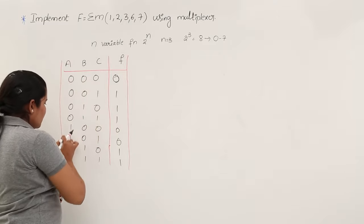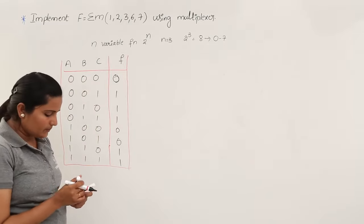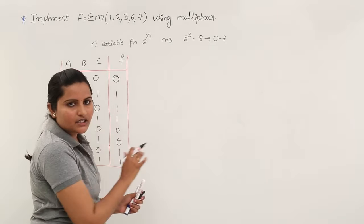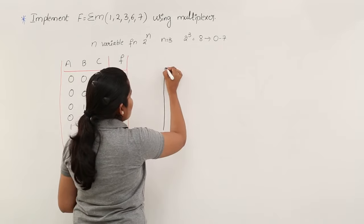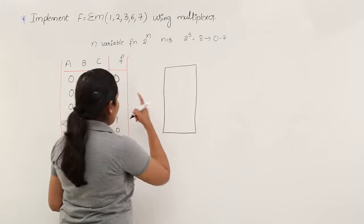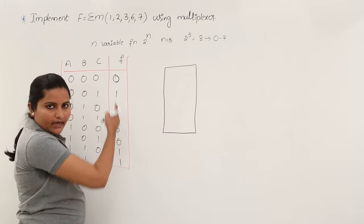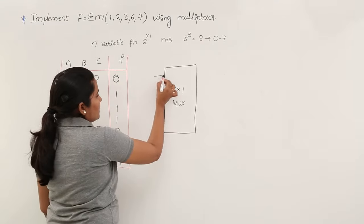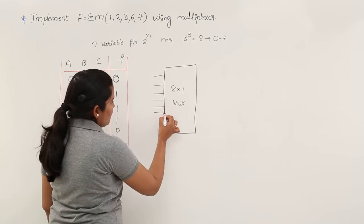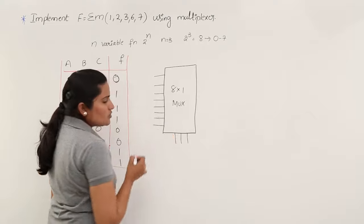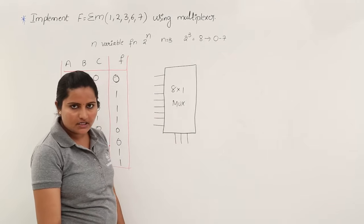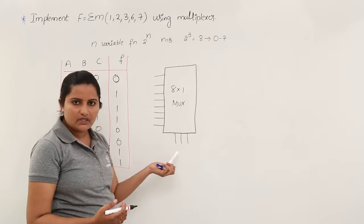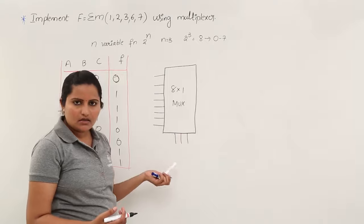Now, using this truth table, to design this functionality using a multiplexer, you need to place your functionality values at the inputs of the MUX, and your input variables at the selection lines. Here I am going to take an 8-by-1 MUX. Since we have 8 combinations, we must take an 8-by-1 MUX, which has 8 inputs and 3 selection lines. Every MUX has 2 power n inputs and n selection lines, so with 8 inputs, selection lines equal 3.